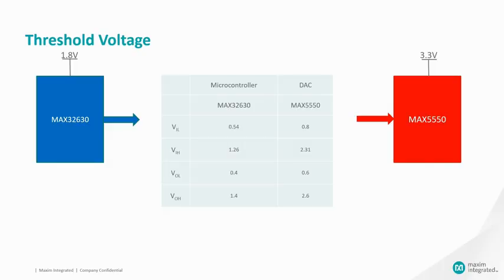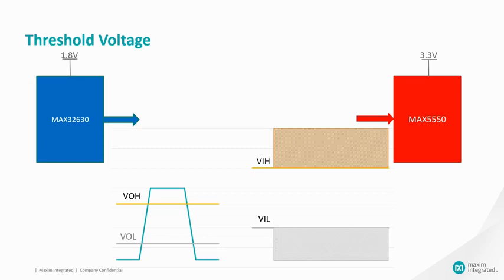Let us assume we are interfacing microcontroller MAX32630 operating on 1.8V with DAC MAX250 operating at 3.3V. The threshold voltages of both ICs are given in the table. For a transmitter, VOL is the maximum voltage for logic low state and VOH is the minimum voltage level for a logic high state. For the receiver, any input voltage less than VIL is guaranteed to be recognized as a logic low state. Typically, these threshold voltages are rated at specific source and sink currents. Ideally, VOL should be much lower than VIL for proper logic low detection, and VOH should be much higher than VIH for proper logic high detection.